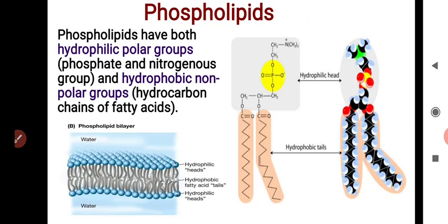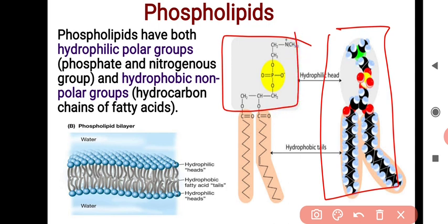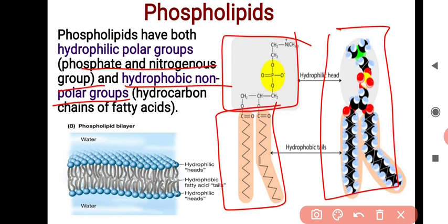Phospholipids have both hydrophilic polar groups and hydrophobic non-polar groups. The hydrophilic polar group contains the phosphate and nitrogenous groups, while the hydrophobic non-polar group is the hydrocarbon chain of the fatty acid.